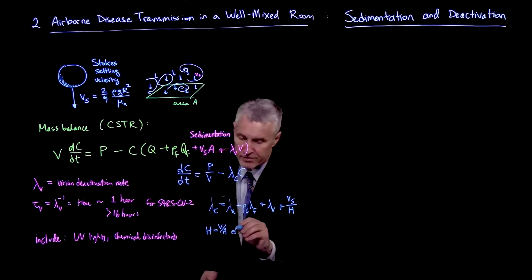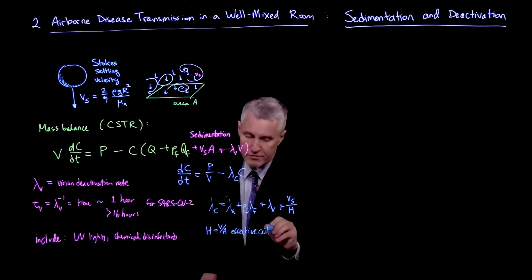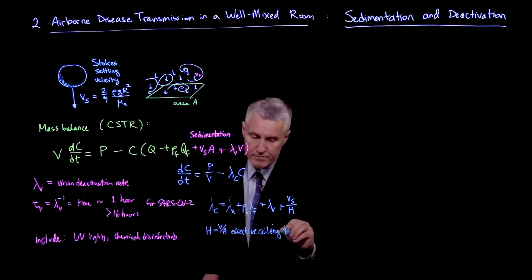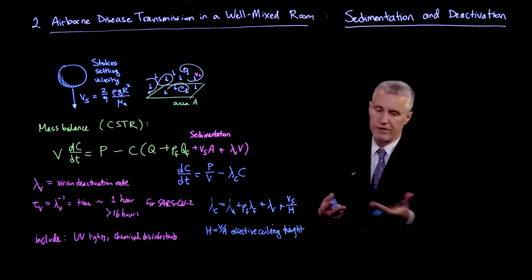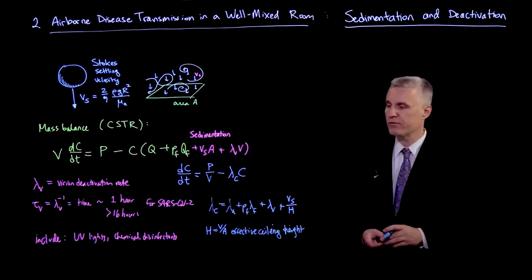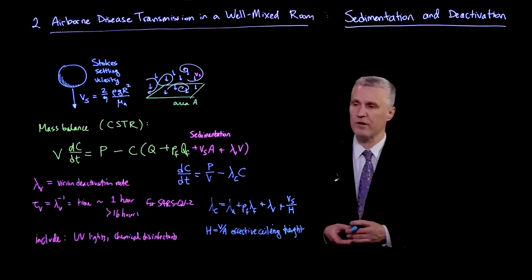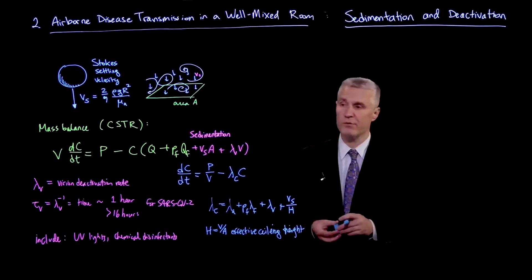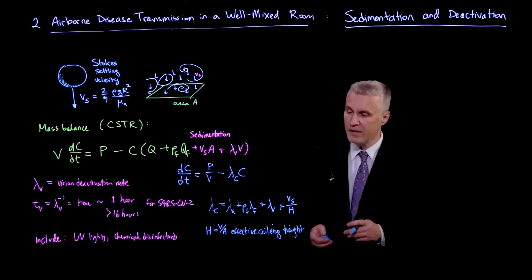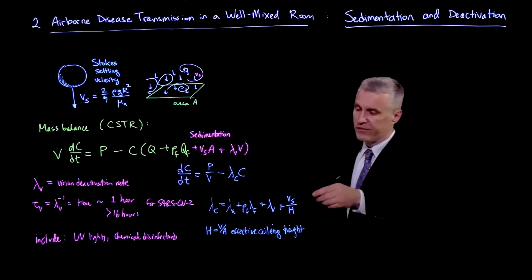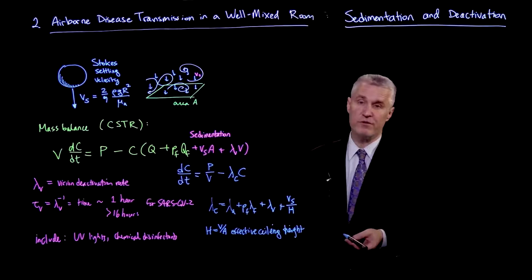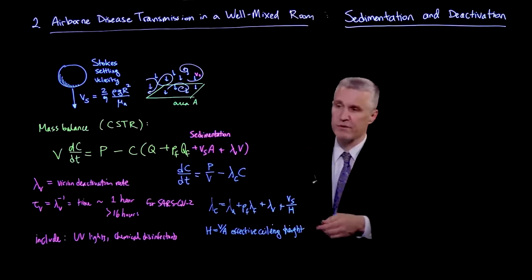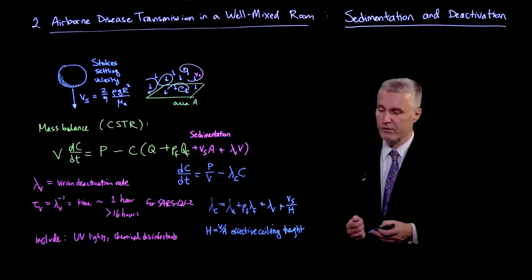But this is some kind of effective ceiling height if it's not a perfect box shape. If you take the volume and divide by the projected area of horizontal surfaces, then that's giving you a sense of the typical height. And that's the typical distance by which particles have to fall. And notice, when I do Vs and divide by H, I am getting something with units of inverse time. So it's just like all the other lambdas.